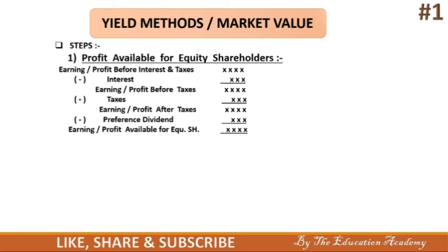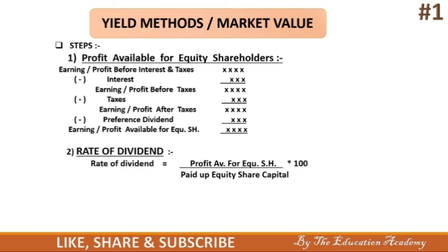Second step है rate of dividend find करना। इसका formula है: Rate of Dividend = (Profit Available for Equity Shareholders × 100) ÷ Paid-up Equity Share Capital। यहाँ केवल paid-up equity share capital लेनी है, preference share capital नहीं।